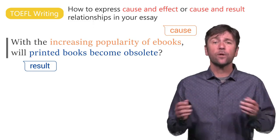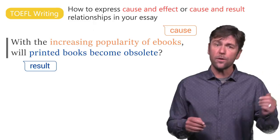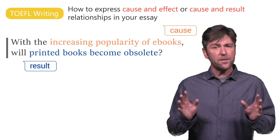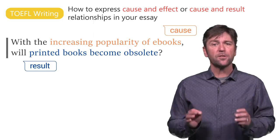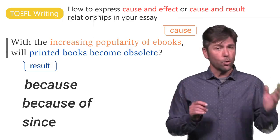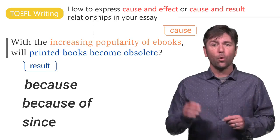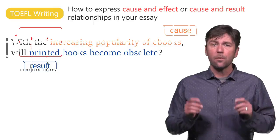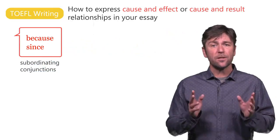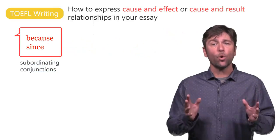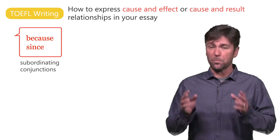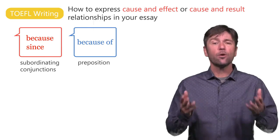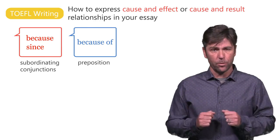So how can we link the cause and the result together? The easiest way is to use because, because of, or since to introduce the cause. Because and since are subordinating conjunctions, whereas because of is a preposition. Here are a few examples.